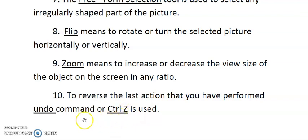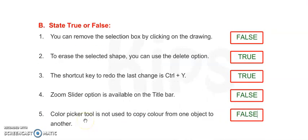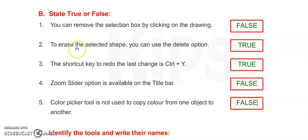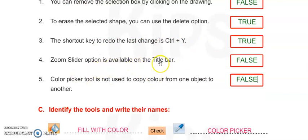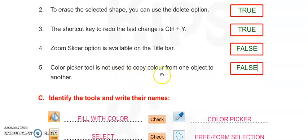Next, Exercise B - State true or false. Number one: You can remove the selection box by clicking on the drawing - FALSE, we have to click outside the drawing. Number two: To erase a selected shape you can use the delete option - TRUE. Number three: The shortcut key to redo the last change is Control+Y - TRUE. Number four: Zoom slider option is available on the title bar - FALSE. Number five: Color picker tool is not used to copy color from one object to another - FALSE.